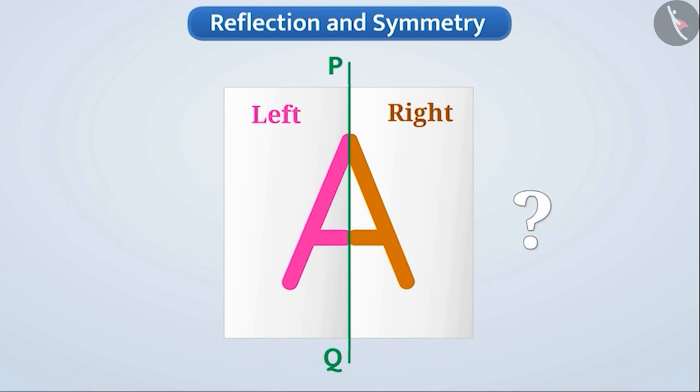What does this tell you? Think a little. Absolutely correct. This shows us that A is a symmetric letter and PQ is a line of symmetry.